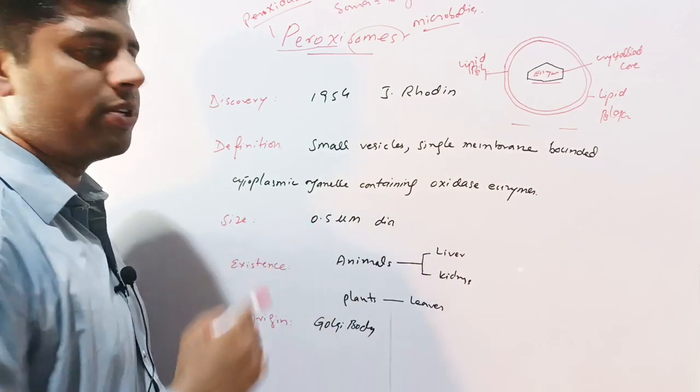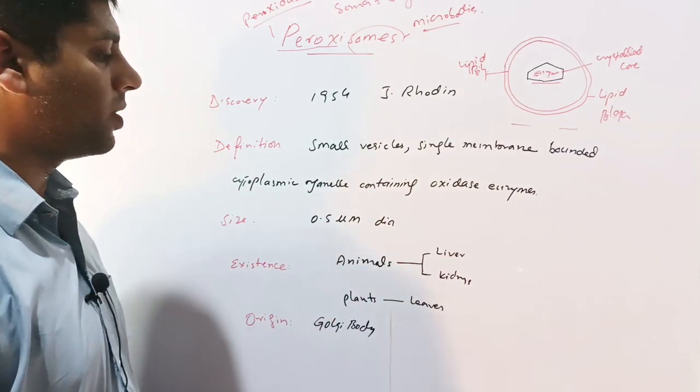Their size is only 0.5 micrometer diameter and therefore these are called microbodies or subcellular structures.